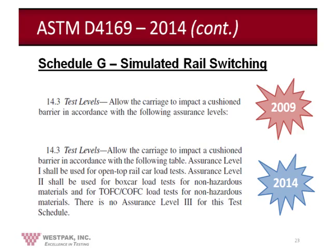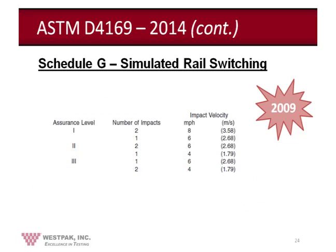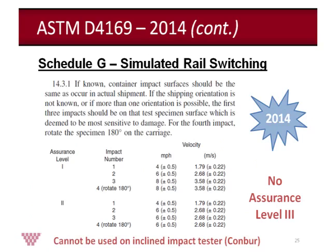For the 2009 revision, section 14.3 was very short with one sentence: 'Allow the carriage to impact a cushion barrier in accordance with the following assurance level.' In the 2014 revision, this section was expanded into a paragraph, clarifying that Assurance Level 1 should be used for open top rail car load tests, Assurance Level 2 is for box car load tests for non-hazardous material, and Assurance Level 3 was eliminated. The levels listed in the table cannot be performed on an incline impact tester.